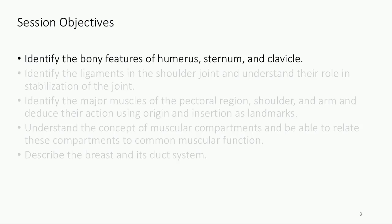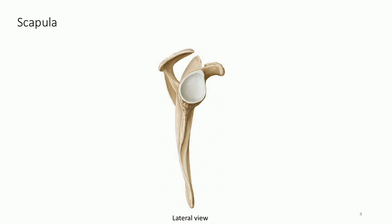Now we're going to think about the bony features of the humerus, sternum, and clavicle. First, a quick review of scapula features: the acromion process and the coracoid process are very important for ligaments of the shoulder. The glenoid fossa is where the humerus will ultimately attach, forming the shoulder joint.